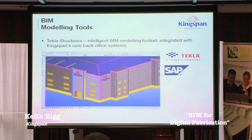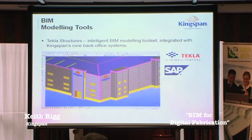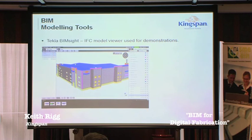We can essentially clad an entire elevation, providing the steel is in situ for us to guide off. The objects are parametric, so you can change the type of panel, the cover width, the profile, the colour, the finish, what flashings, sealings, fixings, and fasteners you need — and it will actually clad the entire elevation in one go, allowing you to make changes very rapidly. We've built the engineering rules into the macros and plugins to allow us to do that much more effectively than doing it longhand.